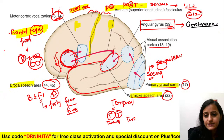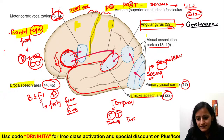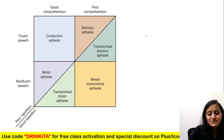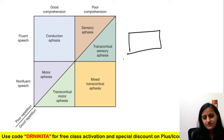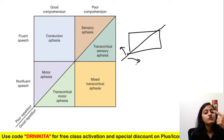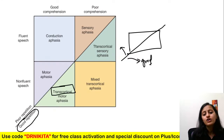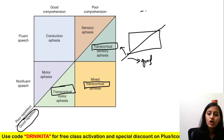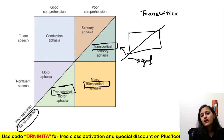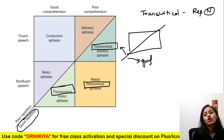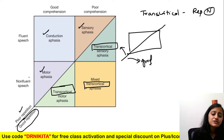Now coming to the types of aphasia — the aphasia chart. In this chart, there is a line for repetition: on one side is poor repetition, on the other is good repetition. The ones with good repetition are all your transcortical aphasias — that is the first key point. In transcortical aphasia, repetition is normal. In sensory, conduction, and motor aphasia, there is poor repetition.